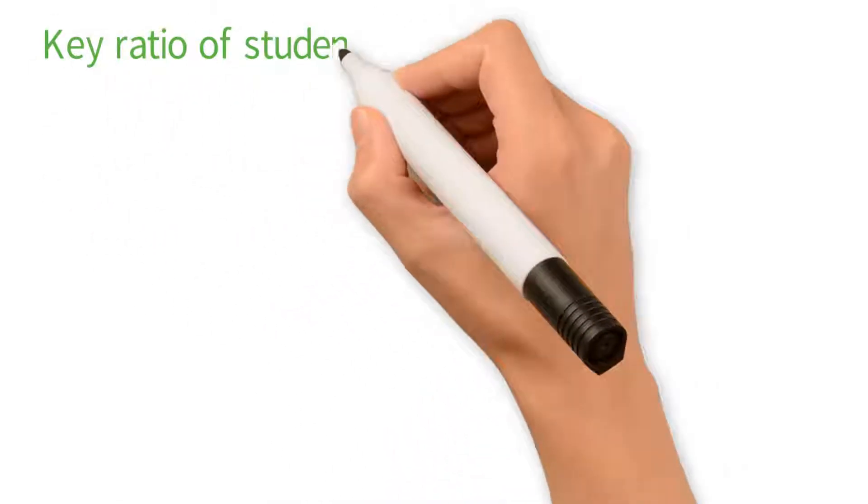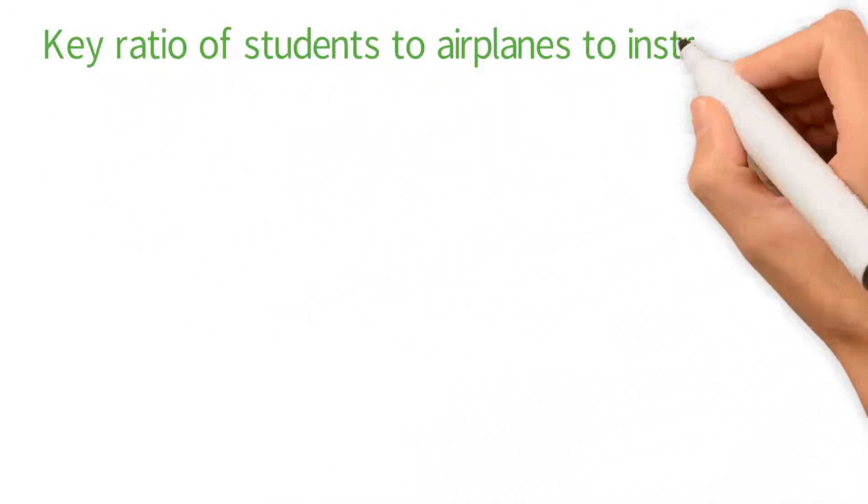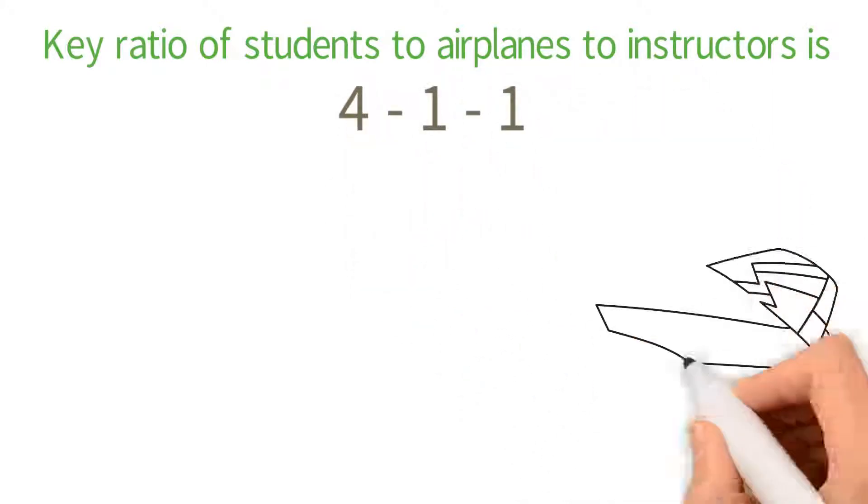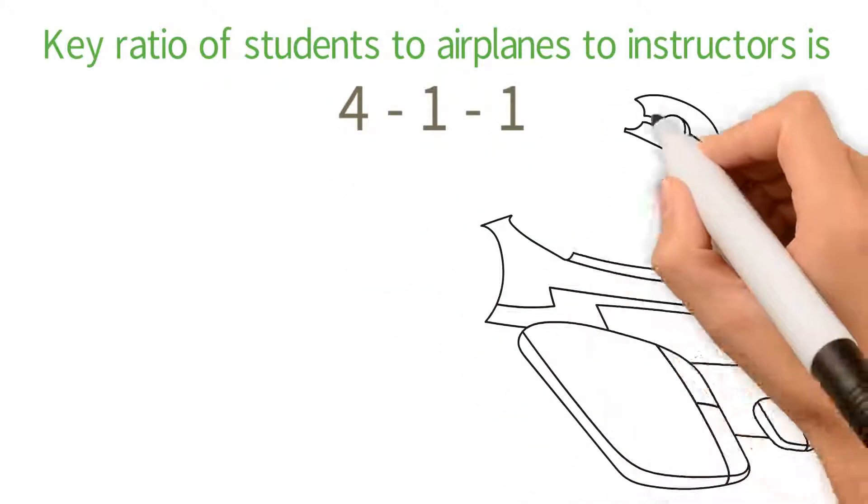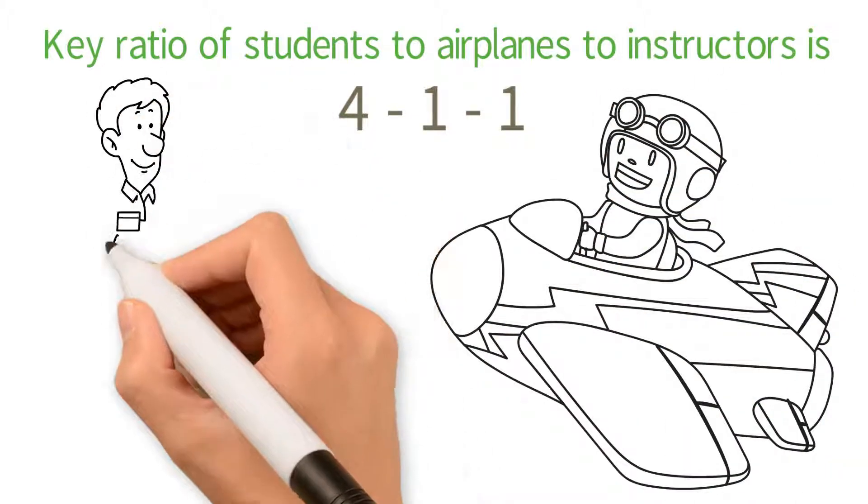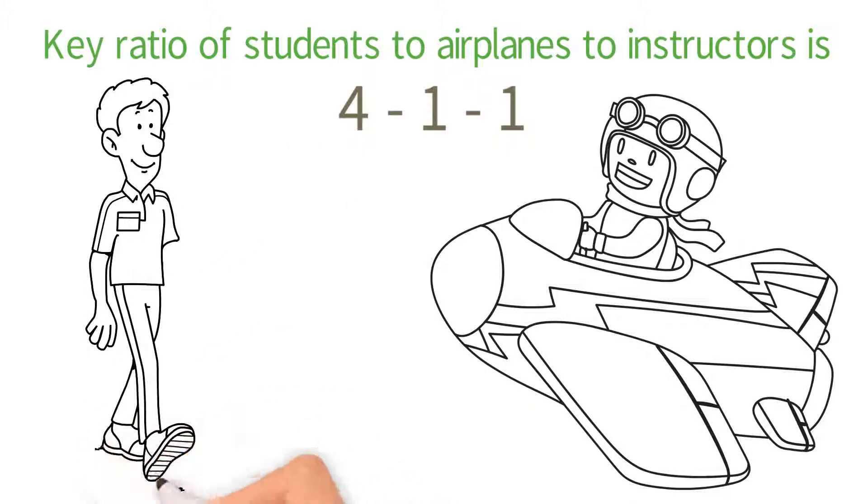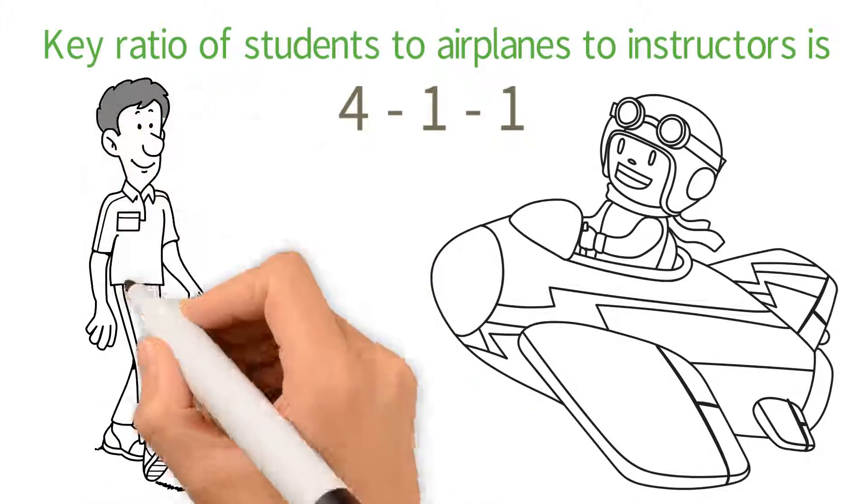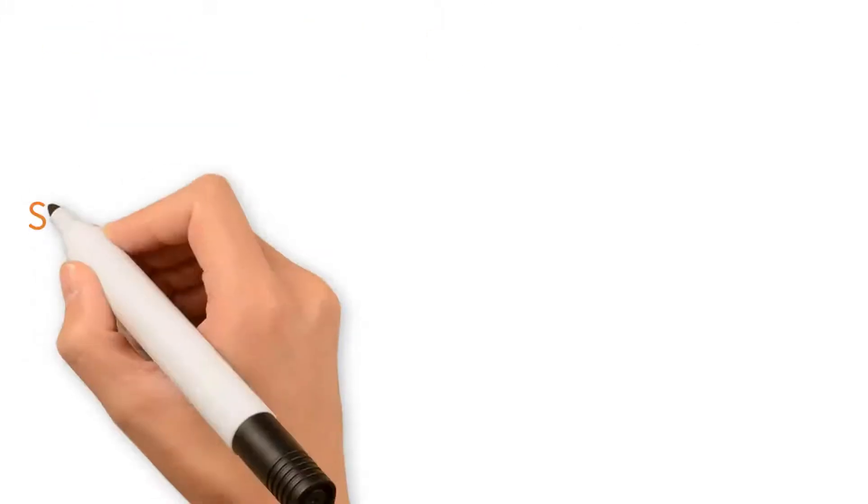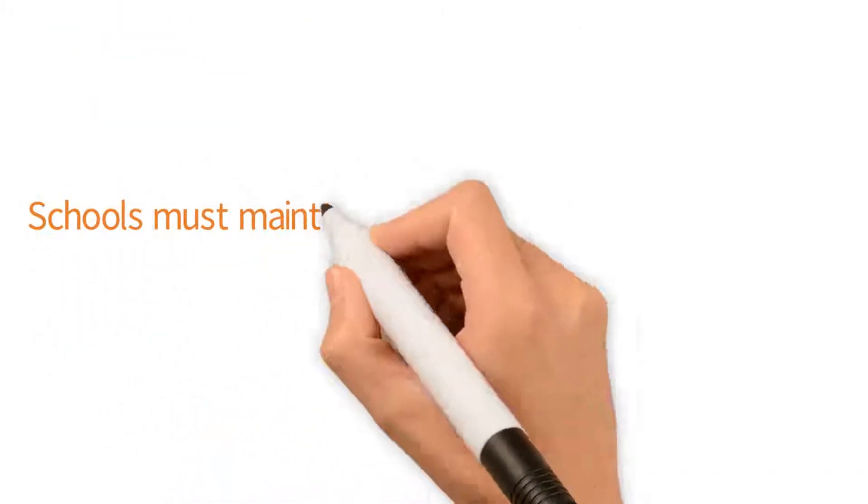The key ratio of students to airplanes to instructors is 4 to 1 to 1. For 4 students, the school needs to have 1 airplane and 1 instructor. So for 8 students, the school needs to have 2 airplanes and 2 instructors. Additionally, they should now have 1 airplane and 1 instructor as a backup in order to compensate for unforeseen issues.